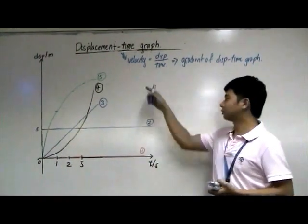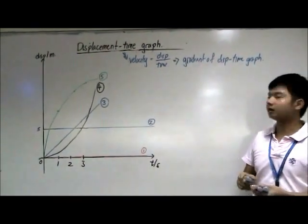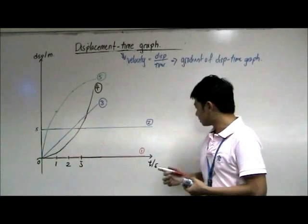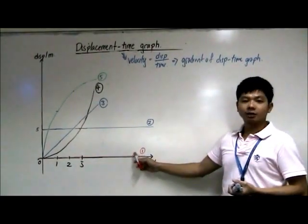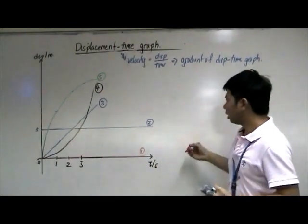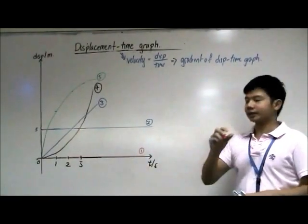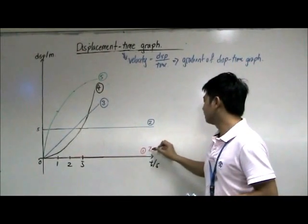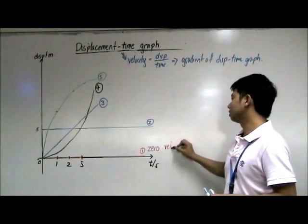Let's look at the five graphs drawn on the board. The first graph is indicated by a red line. This is a horizontal line that passes through zero. Horizontal line has zero gradient. Zero gradient means the object is moving at zero velocity.